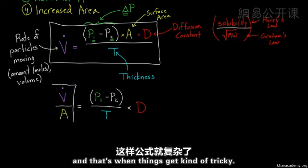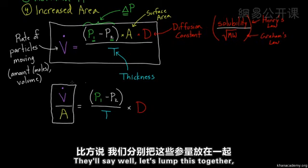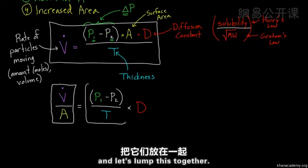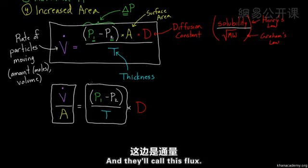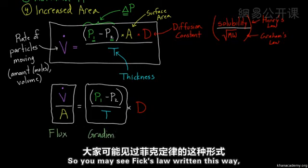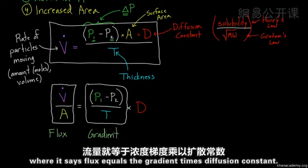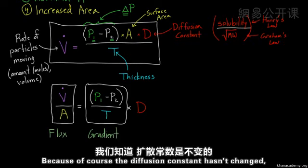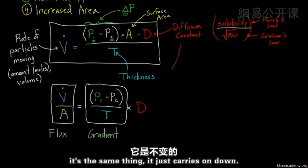And that's when things get kind of tricky. They'll say, well, let's lump this together and let's lump this together. And they'll call this flux. They'll call this flux. And the second part they'll call gradient. So you may see Fick's law written this way, where it says flux equals the gradient times diffusion constant. Because, of course, the diffusion constant hasn't changed. It's the same thing. It just carries on down.